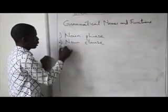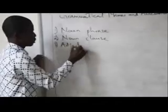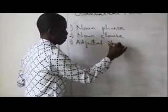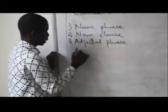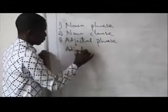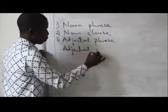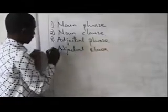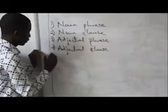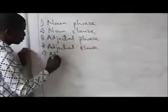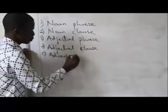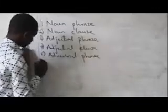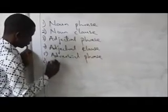Three, you can say it is an adjectival phrase or it is an adjectival clause — that makes it four. And finally, you can identify it as an adverbial phrase and an adverbial clause.